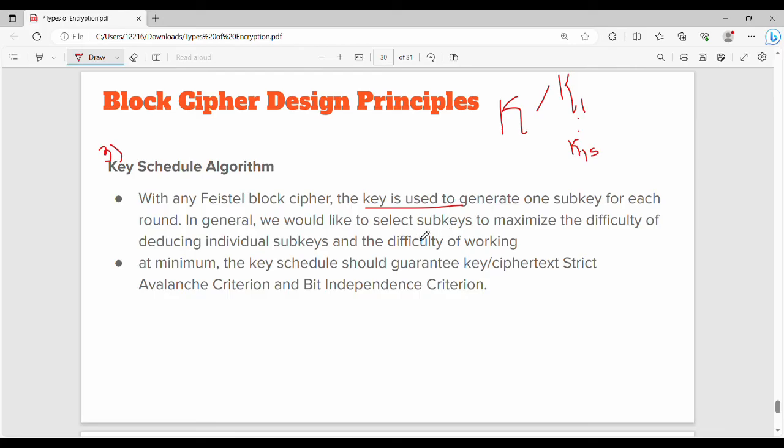How do you do these subkeys? These subkeys should be in such a way that it should maximize the difficulty of deducing individual subkeys and the difficulty of working. At the minimum level, the key schedule algorithm, that is, what algorithm is used to generate the main key and the subkeys, should guarantee that the key or ciphertext should follow strict avalanche criteria and bit independence criteria.